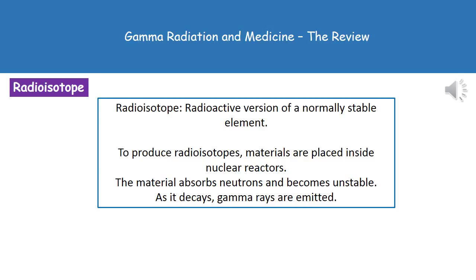In order to produce this radioisotope, we're going to place a material inside a nuclear reactor. When that material is inside the nuclear reactor, it's going to absorb neutrons and, as a result, become unstable. As it then decays, it will emit those gamma rays, which we can then use.